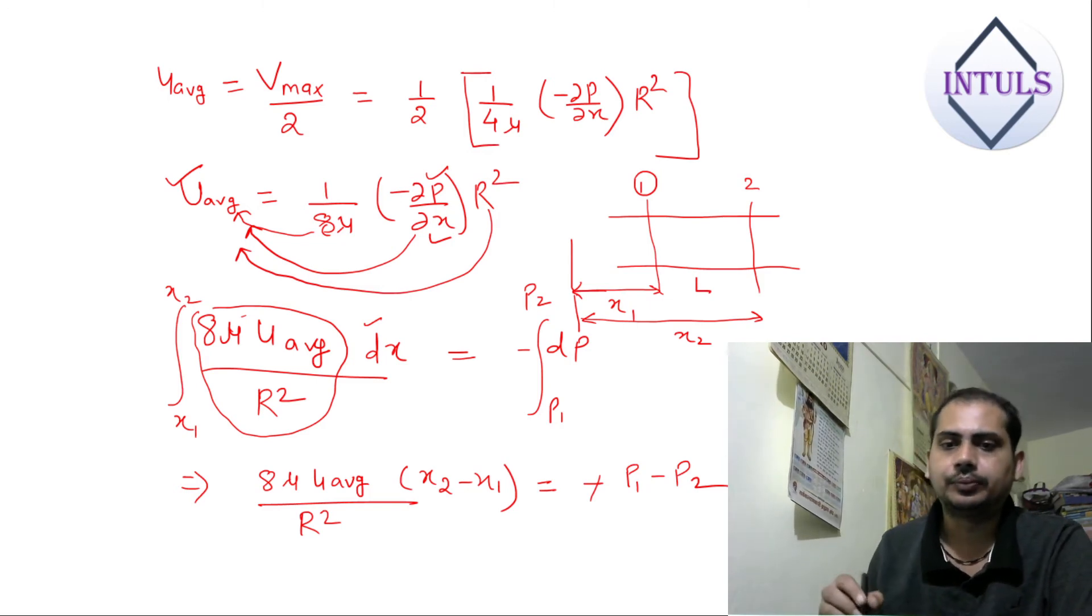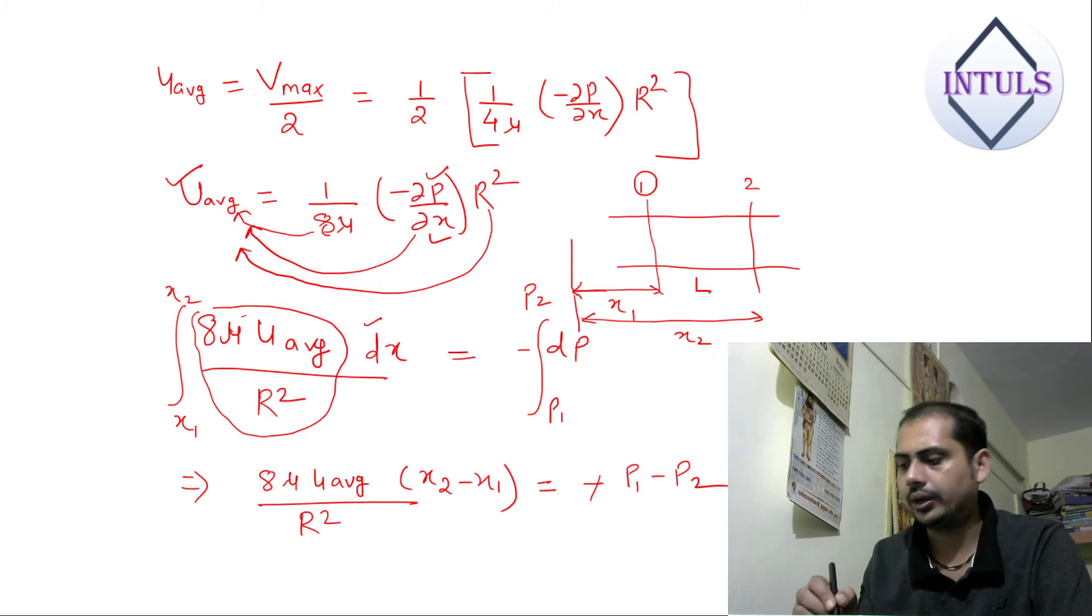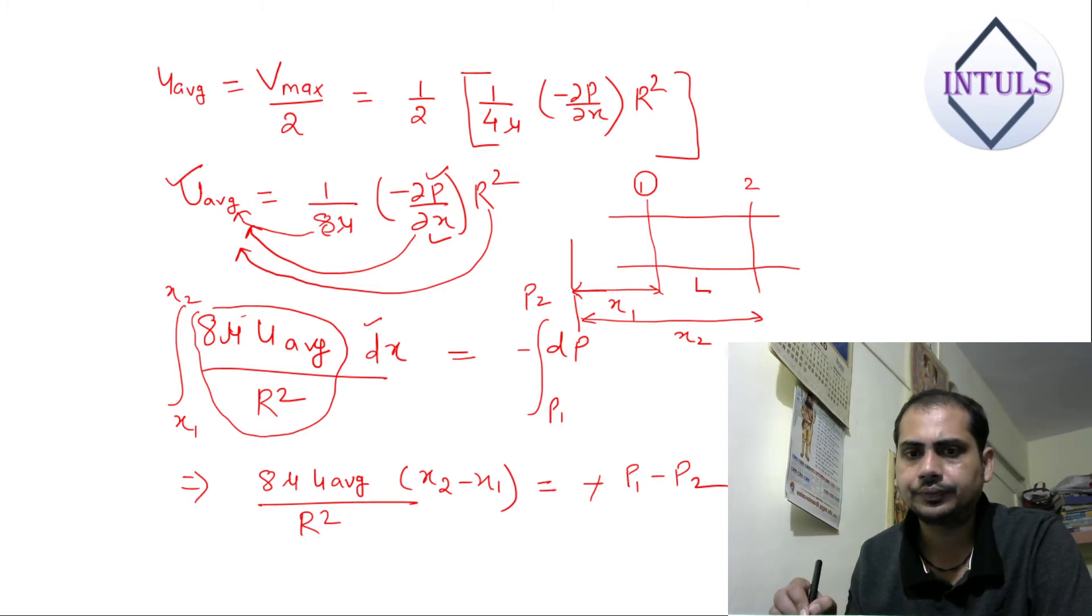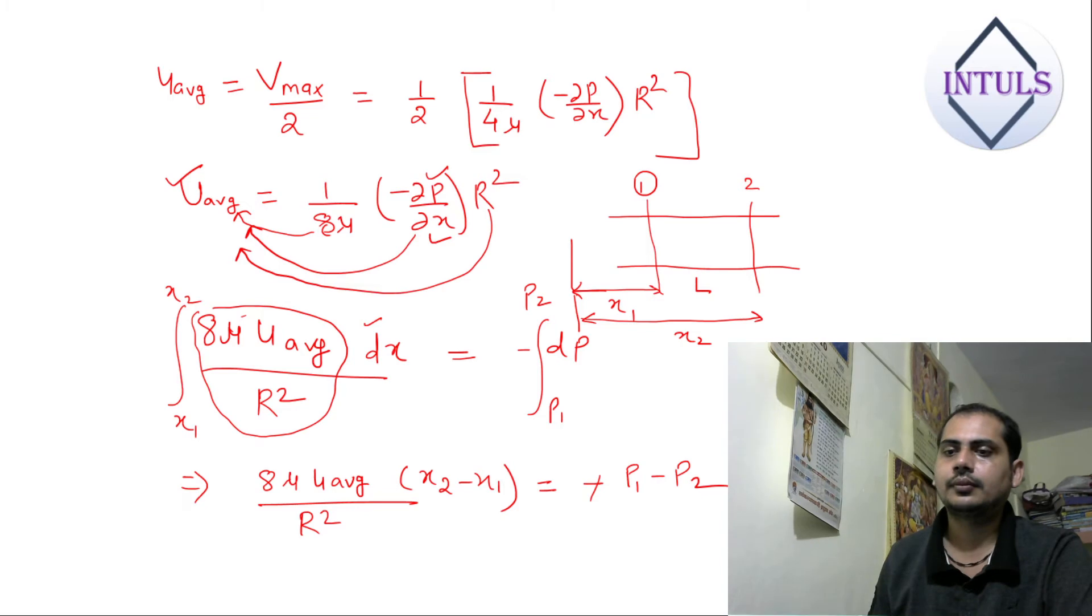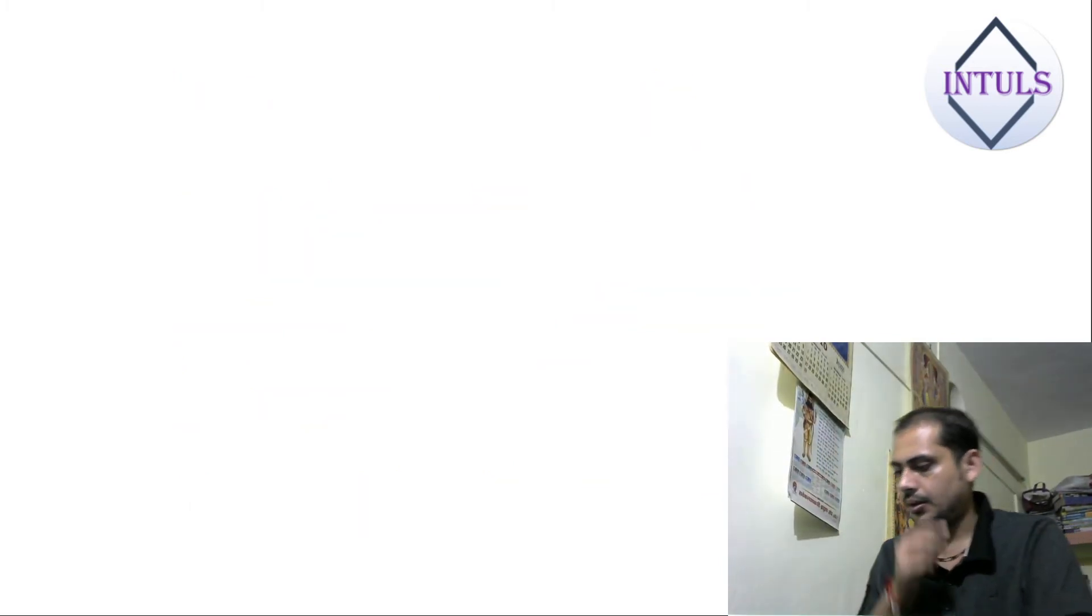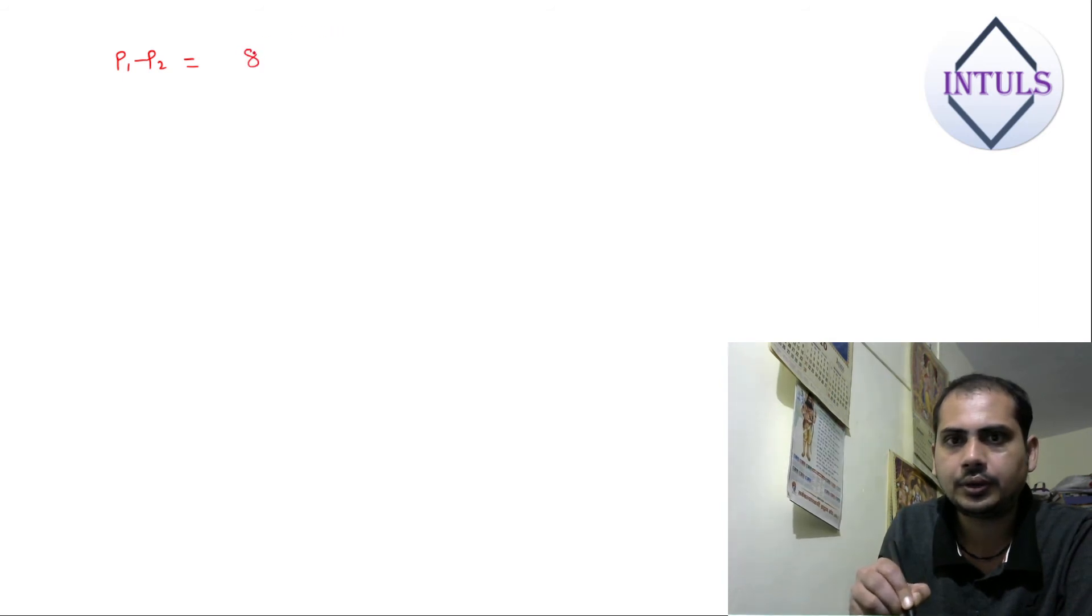This is very simple mathematics integral. And x2 minus x1 we can call it L. From this geometry, it is visible that x2 minus x1 is equal to L. So you can write very clearly that p1 minus p2 is 8 mu u_average L upon R square.